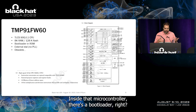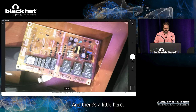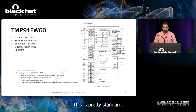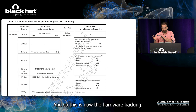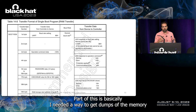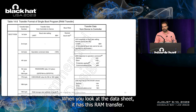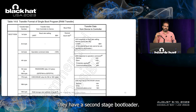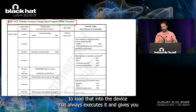The oven has a little 16-bit microcontroller with a bootloader. The bootloader is what allows us to potentially reprogram the device — this is what manufacturers used to load firmware. There's a connector they used for manufacturing. The bootloader has security to prevent cloning or readout. To get memory dumps, you need to use a RAM transfer command: you load a second-stage bootloader into the device, it executes, and gives you the ability to read or write memory.